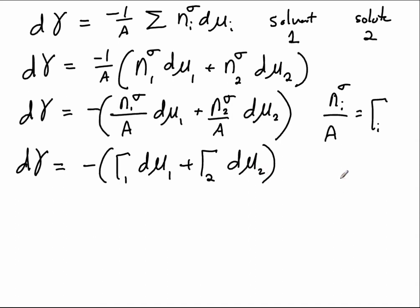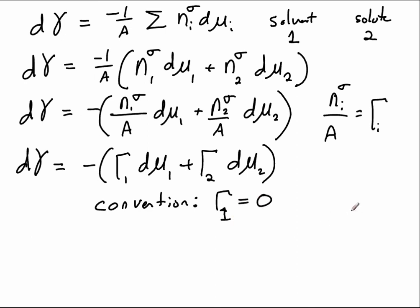At this stage we apply the convention typically used with the Gibbs dividing surface: we place it such that the surface excess of the solvent, Γ_1, is equal to zero. Once we apply that convention, the Γ_1 dμ_1 term vanishes, and we can write that the surface tension changes as a function of the surface excess of the solute: dγ = −Γ_2 dμ_2.